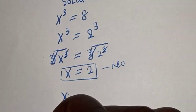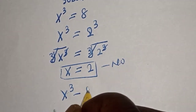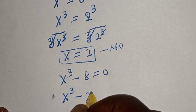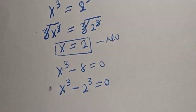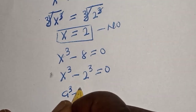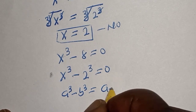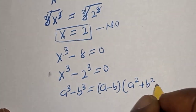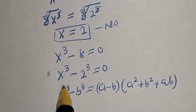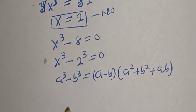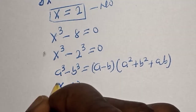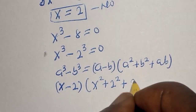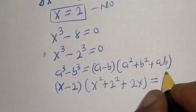So we have the given equation s raised to power 3 minus 8 is equal to 0, which is s raised to power 3 minus 2 raised to power 3 is equal to 0. Take note of this rule: a raised to power 3 minus b raised to power 3 is equal to (a minus b) multiplied by (a squared plus b squared plus ab), where a is equal to s and b is 2. So we have (s minus 2)(s squared plus 2 squared plus 2s) is equal to 0.